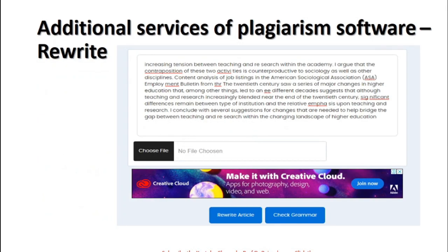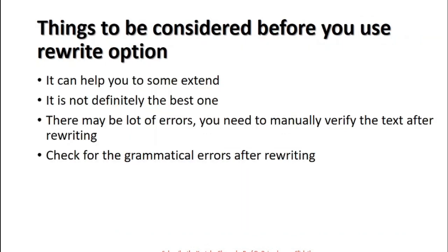There are some additional services available in the plagiarism software. There is an option called 'Rewrite' — after feeding your document, if you select 'Rewrite Article,' the system automatically rewrites the given passage. However, keep certain things in mind: it can help you only to a certain extent, not 100 percent — it is not the best solution, it is just an aid. There may be a lot of errors after the rewriting, so you must check it manually. Also check for grammatical errors after rewriting.